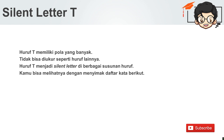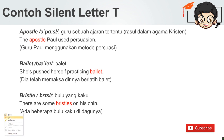Yang pertama: kita hilangkan huruf T-nya setelah huruf S. T berada di silabel terakhir, diawali oleh huruf S dan diakhiri oleh silent I, dan dibaca L-nya saja. Contoh: 'apostle' — guru sebuah ajaran tertentu atau rasul dalam agama Kristen. The apostle Paul used persuasion. Guru Paul menggunakan metode persuasi atau bujukan.